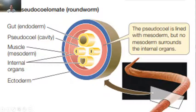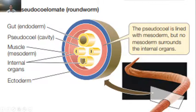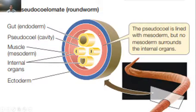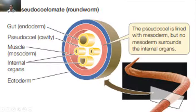These animals have a body cavity, but that is not a true coelom. It is called a pseudocoelom. In the diagram, you can see the pseudocoelom shown in white color. The pseudocoelom is lined with mesoderm on one side — the cavity inside has mesoderm on the outer side but not on the inner side.